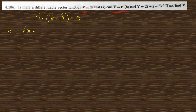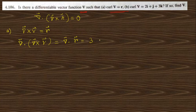Here, curl of V is given as R. So if we find the divergence of curl of V, we get divergence of R, which is 3. If you don't know this, go to the previous lecture where the proof that divergence of R equals 3 is given. Since this is not equal to 0, curl of V = R is not possible.